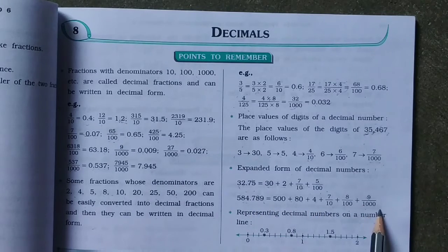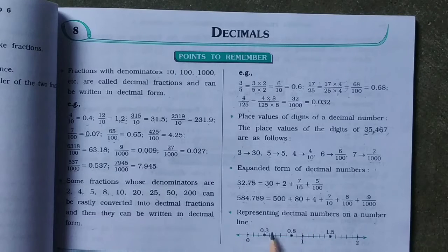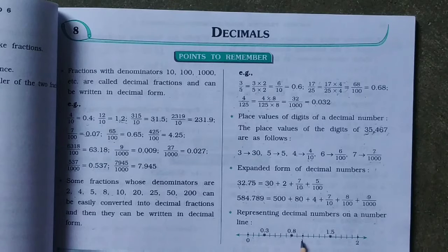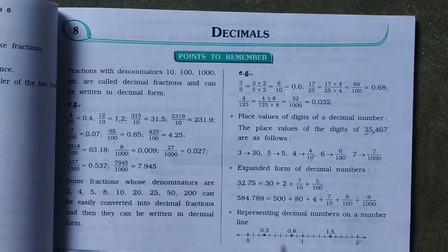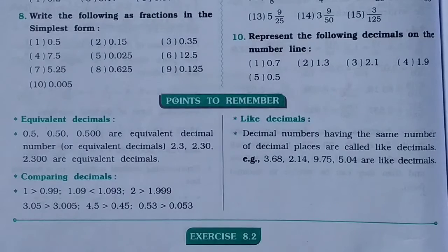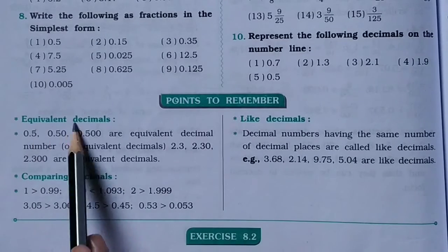Representing decimal numbers on a number line: between 0 and 1 we have 0.1, 0.2, 0.3 … 0.9, then 1. Between 1 and 2 we have 1.1, 1.2 … 1.9, then 2. Each unit is divided into 10 equal parts, so each part equals 1 by 10.